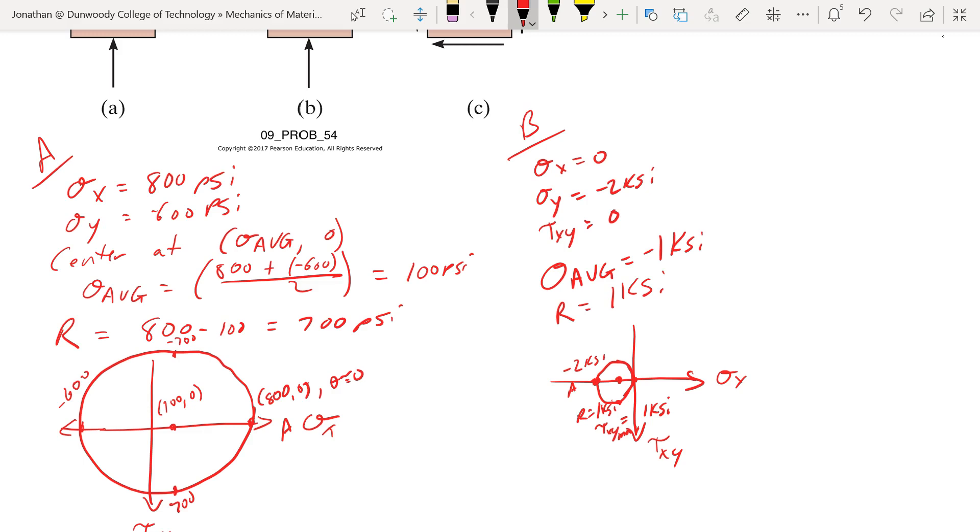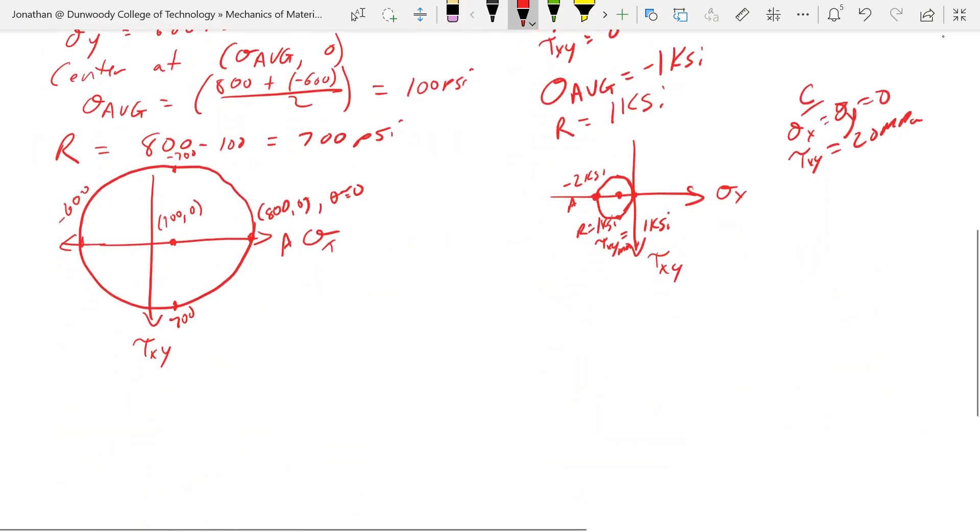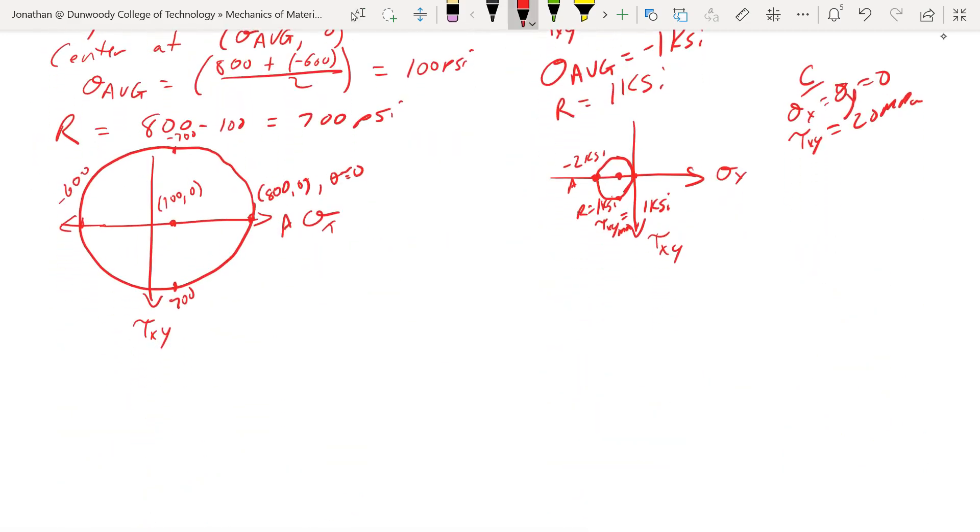And then we'll move on to the last one. Now we have part C. I'll have to move down a little bit here, but I'll just write it down. Sigma x equals sigma y equals 0, and tau xy is positive 20 megapascals. Alright, so for this one, part C, what do we know?